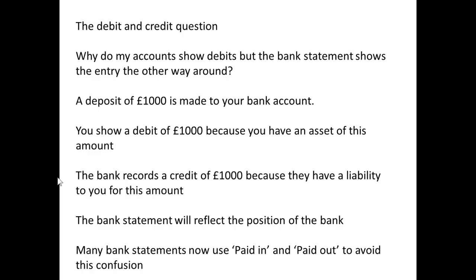When the first bank reconciliation is carried out, there is often a question about debits and credits — why is it that the accounts always show debits when money is paid in, but the bank shows the entry the other way around? The answer is very simple. A deposit of £1,000 is made to your bank account. You debit your cash account for the business because you have an asset of £1,000. The bank, on the other hand, has to record a credit of £1,000 because they have a liability to you for that amount.